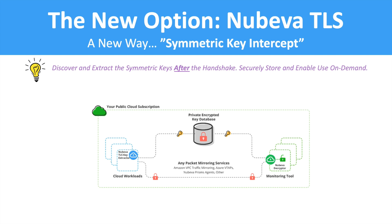The ephemeral part means that the symmetric key is only used for a single TLS session. Subsequent TLS sessions will go through the TLS handshake again and generate new symmetric keys. Because each TLS session creates a new symmetric session key for encryption, the security posture of the underlying host is substantially increased.